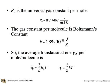RU is the universal gas constant per mole, 8.3144621 joule per mole degree Kelvin. The gas constant per molecule is Boltzmann's constant, which is 1.38 times 10 to the minus 23 joules per degree Kelvin. So the average kinetic energy per mole or molecule is either 3 halves times the universal gas constant times T, or 3 halves KT.